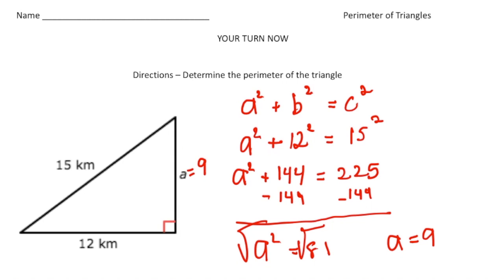So now to find the perimeter, we need to add up 15 plus 12 plus 9. So the perimeter is going to be 15 plus 12 plus 9. And 15 plus 12 is 27. And 27 plus 9 is 36. So the perimeter of this right triangle is 36 kilometers. And there it is. All right, how'd you do?